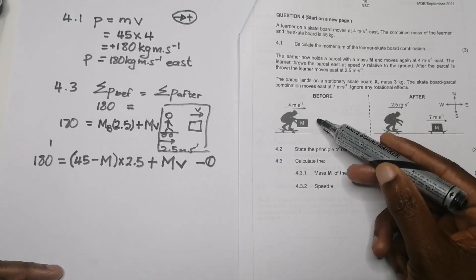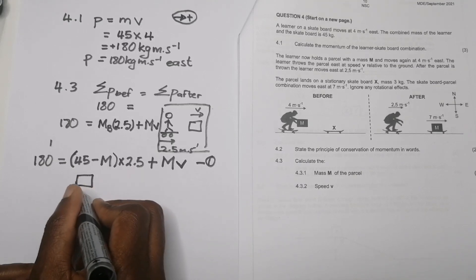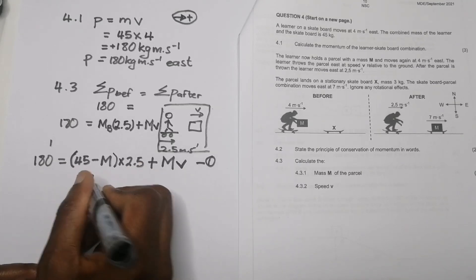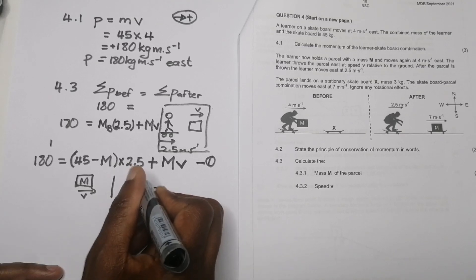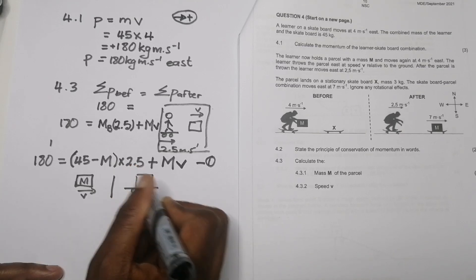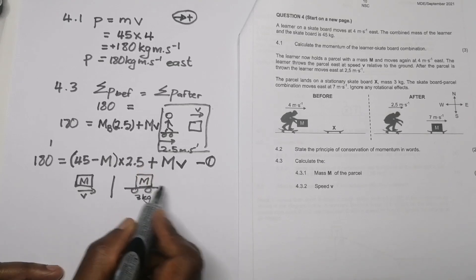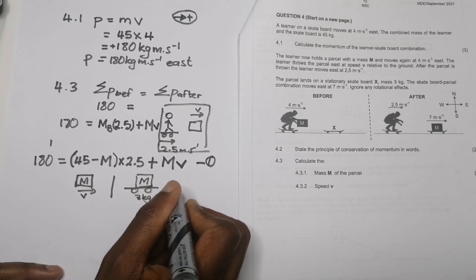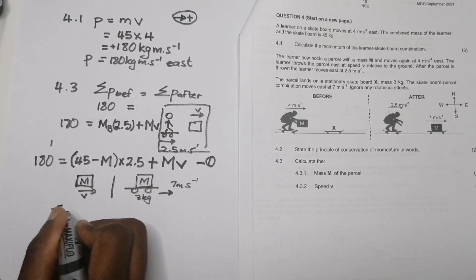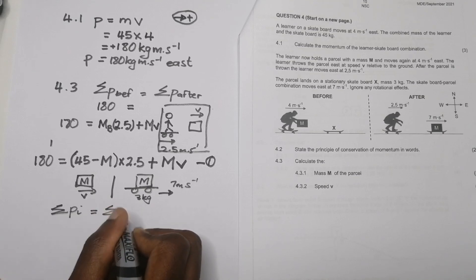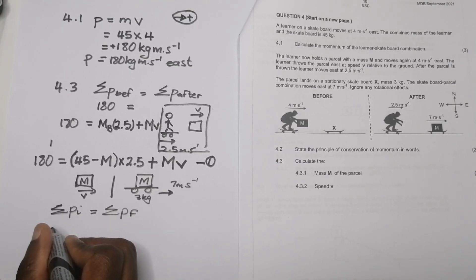Now let's look at scenario two. We have a stationary skateboard and the parcel already moving at speed v. The parcel of mass m lands on another skateboard of mass 3 kilograms. They told us the two then move at 7 meters per second after the parcel lands. Setting up the equation: sum of initial momentum equals sum of final momentum.